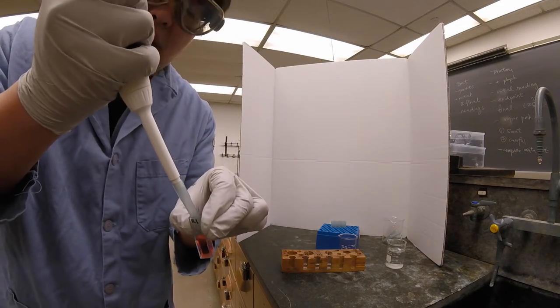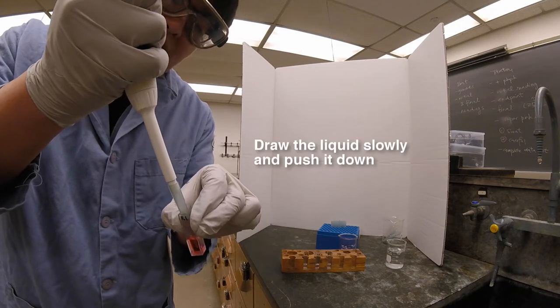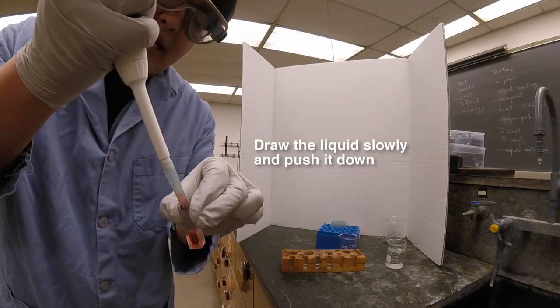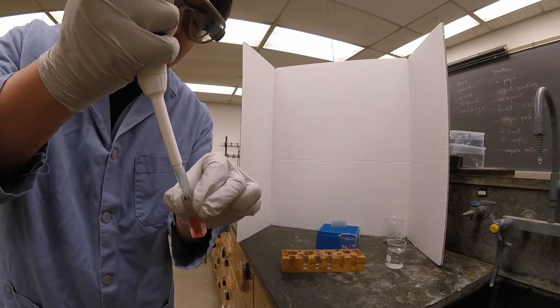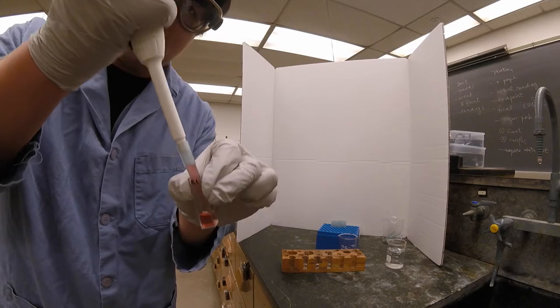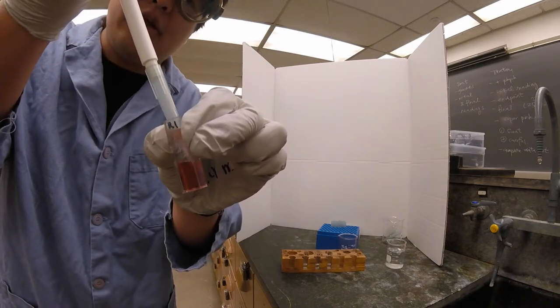When you add the water, you want to draw up the liquid again slowly and then push it back down. You don't really have to go to the second stop for this because we're just mixing, but the idea is to get a homogenous solution so that the concentration is even throughout the cuvette.